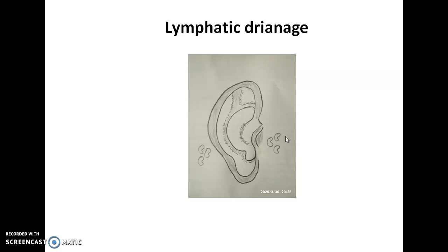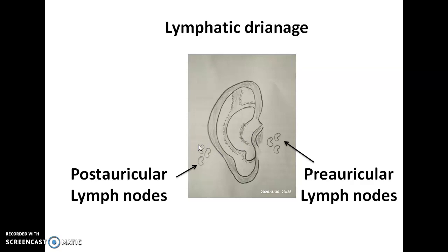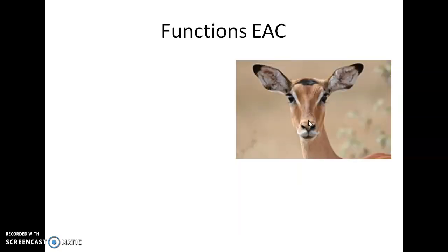Regarding lymphatic drainage: infection in the anterior portion of the external auditory canal drains into the preauricular lymph nodes, in front of the auricle. Infection in the posterior part drains into the mastoid or post-auricular lymph nodes. This means that by identifying which lymph nodes are swollen, you can determine which wall of the external auditory canal is infected — even before examining the canal directly.